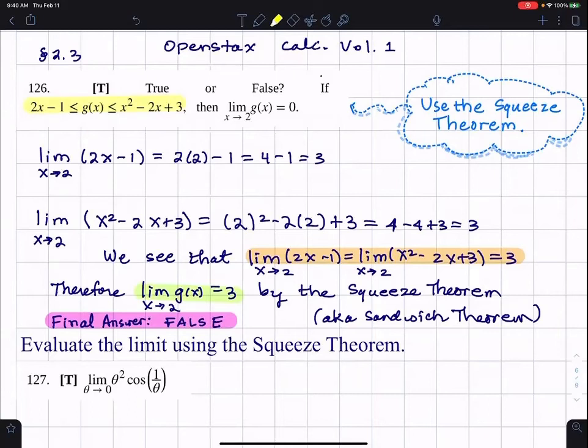I mean, if you know it exists, you don't have to use the squeeze theorem. You could just throw in front of these guys limit, limit, limit. And then you have 3 less than or equal limit of G of X less than or equal 3. You could do that.